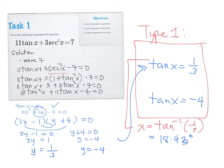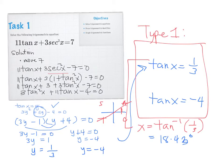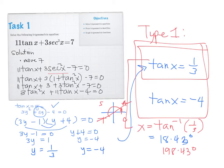We are still working with tangent X equals 1/3. Using the CAST rule, tangent is positive in the first and third quadrants. The first answer is 18.43 degrees. For the third quadrant, we add 180: 180 plus 18.43 equals 198.43 degrees. So the two answers for tangent X equals 1/3 are 18.43 and 198.43 degrees.